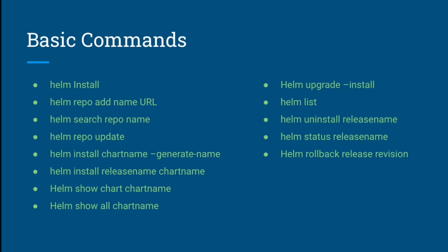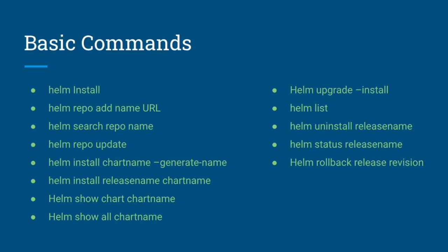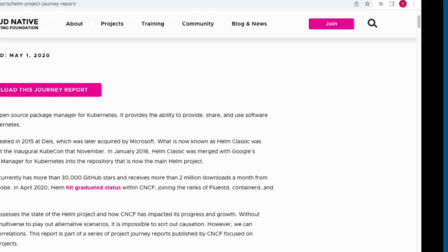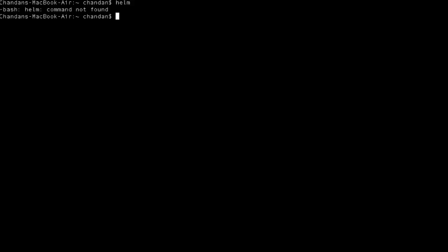There are many Helm commands — for installing, repo-related actions, viewing charts, uninstalling, rolling back, or upgrading. First, we need to install Helm to run these commands. We'll go to the terminal and simply type Helm — it says 'command not found', which means Helm is not installed. So let's install it.